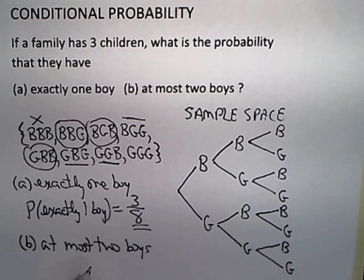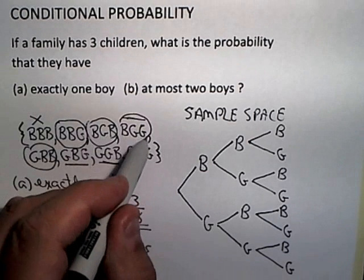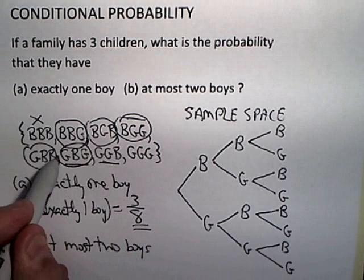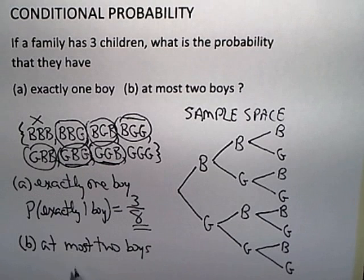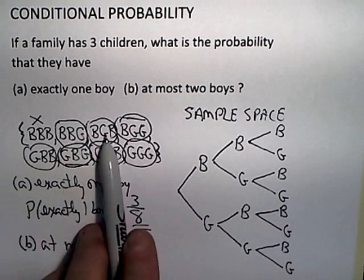It also includes one boy. Just having one boy is at most two boys, so all the one boys would get counted. That's a one boy, and that's a one boy, and that's a one boy. And having no boys would satisfy at most two boys, so you would have this girl, girl, girl possibility.